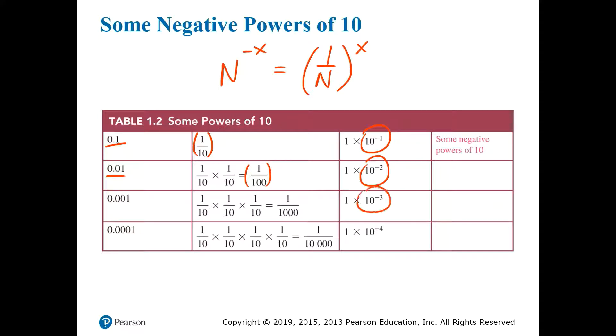10 to the minus 3 is 1 tenth times 1 tenth times 1 tenth, which is 1 over 1,000, or 0.001. You can see that it goes on from here, and you should also notice that 10 raised to any negative number is always going to give you a number less than 1.